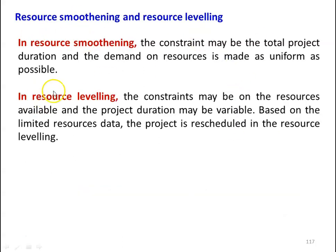The definition for resource smoothening: in resource smoothening, the constraint may be the total project duration, and the demand on the resources is made as uniform as possible. In the PERT-CPM network, we calculate the TE and TL values and we calculate the total project duration. In resource smoothening, the project duration you cannot alter — you cannot change the number of days for completion of the project. Every activity requires resources: man hours and materials. We have to adjust the demand for resources and make the demand as uniform as possible.